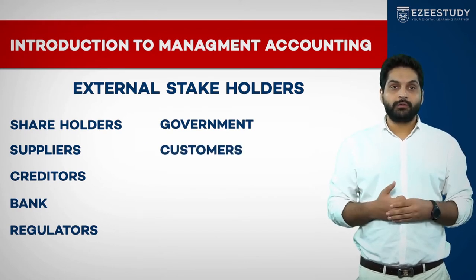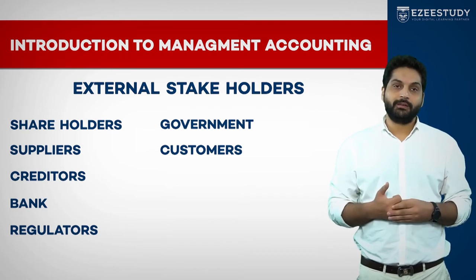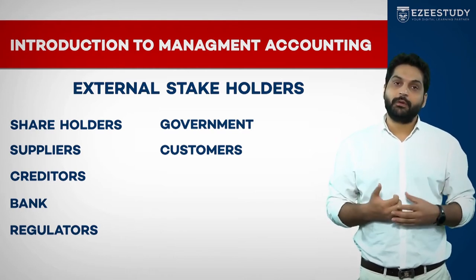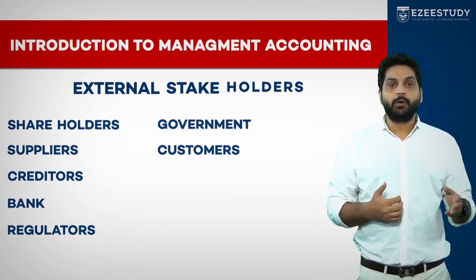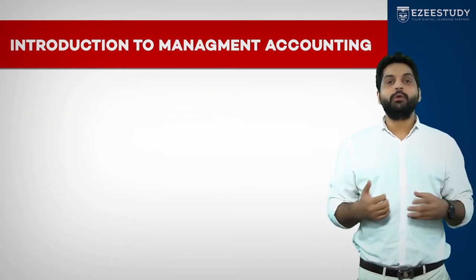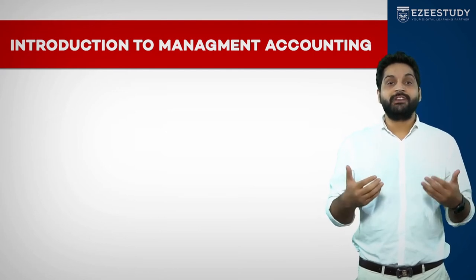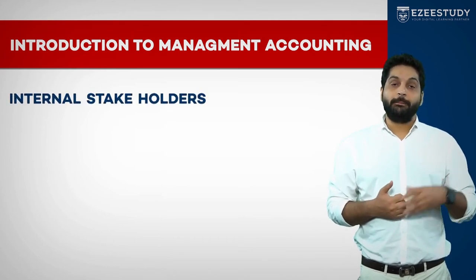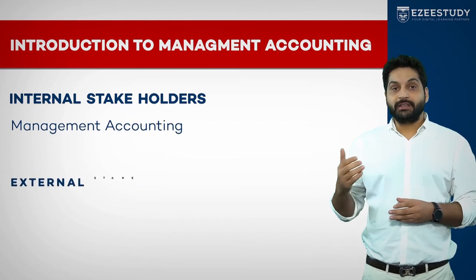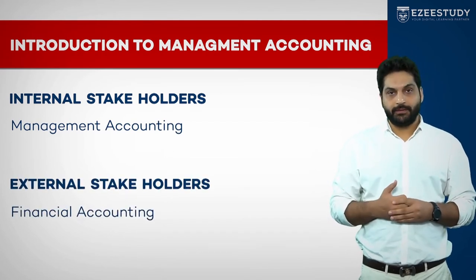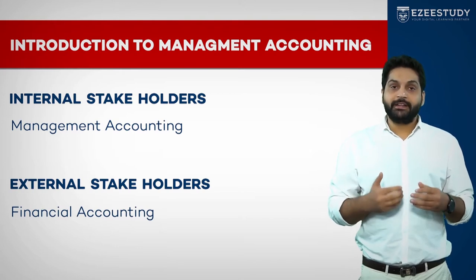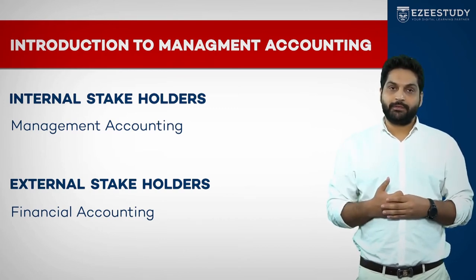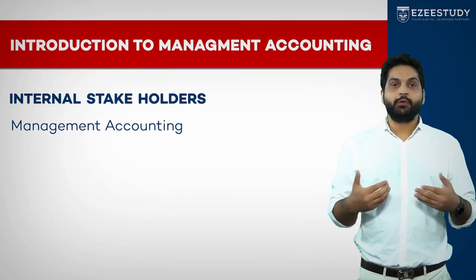All these stakeholders are attached to the organization and need information related to the organization. Internal stakeholders are served by management accounting, and external stakeholders are served by financial accounting. Their objectives are different, and therefore the information provided to them is also different.